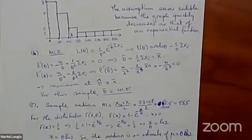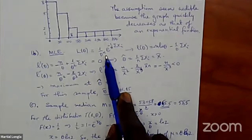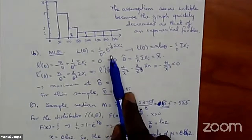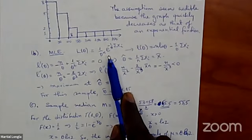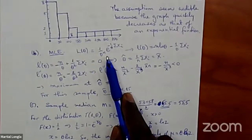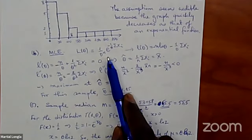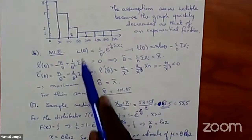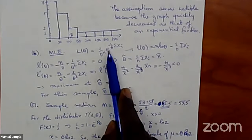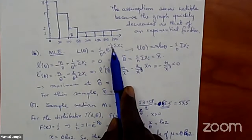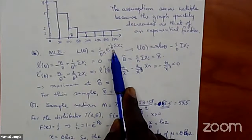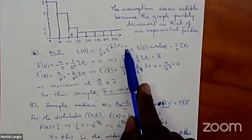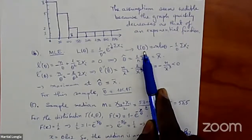Then the question asks: get the MLE. To find the MLE, you rewrite the likelihood function. The likelihood function is the product of the PDF values for all observations. When multiplying, the PDF is (1/θ)·e^(−x/θ). Multiplying across all xᵢ gives (1/θ)^n, and the product of exponentials becomes e^(−(1/θ)·Σxᵢ). That's the likelihood function. Then you take the log-likelihood, because we always work with the log-likelihood.